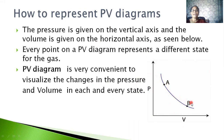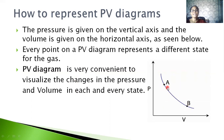Every point on the PV diagram represents a different state of the gas. The initial state is represented by A and the final state is represented by B in this figure. This PV diagram is very convenient to visualize the changes in pressure and volume at each and every state. We can find the pressure and volume at any state — by extending a line toward the pressure axis we get the pressure, and toward the volume axis we get the volume.